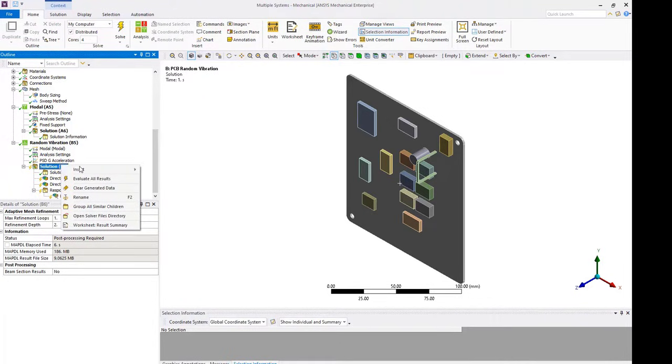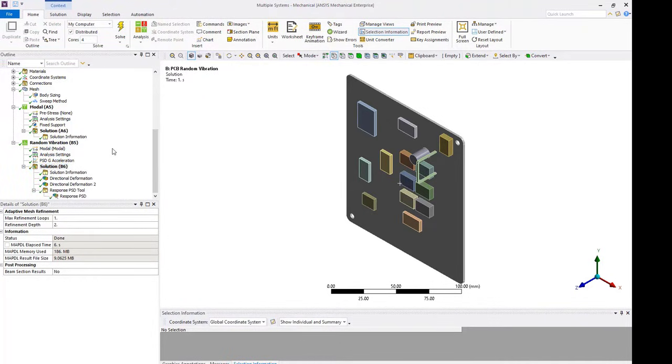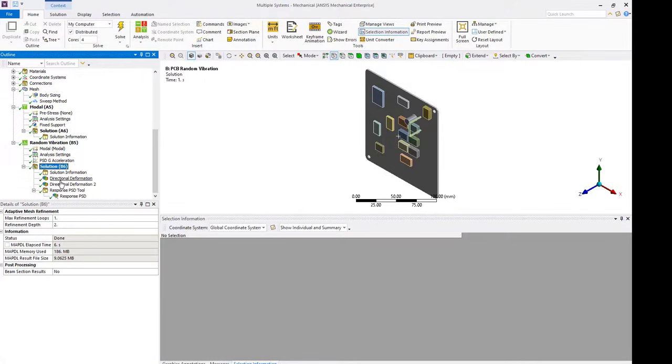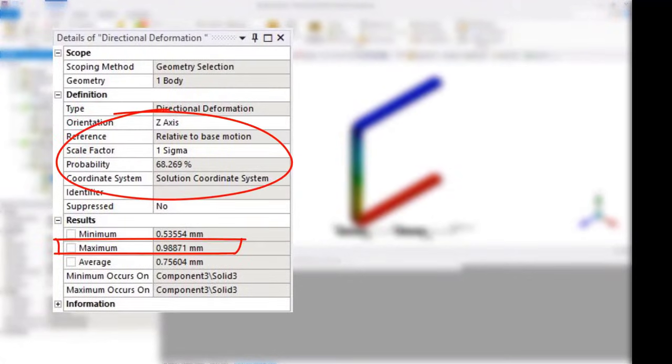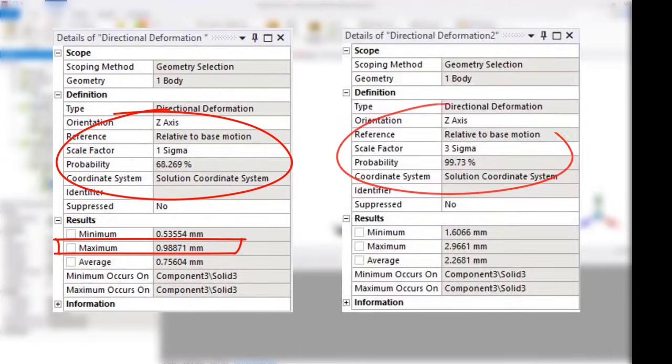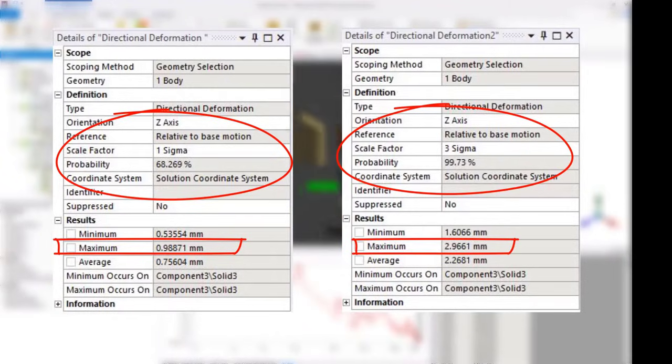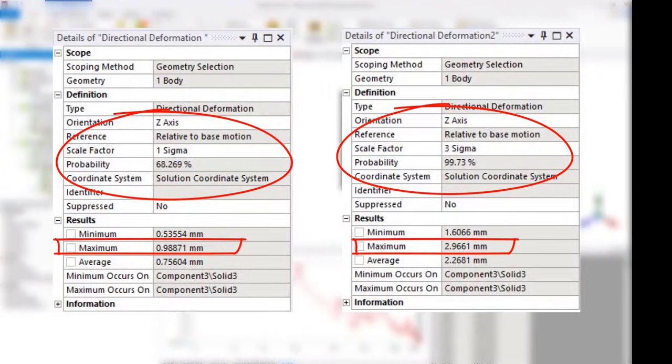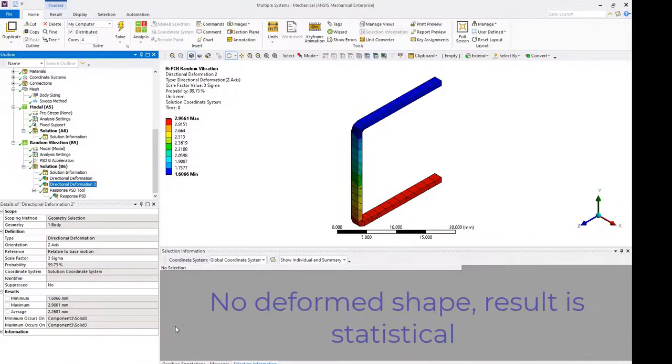Next, evaluate the results. By examining the 1 sigma directional deformation result, one can conclude that there is about a 68.3% probability that the deformation of the PCB component will be below 0.98 mm. Whereas, for a 3 sigma directional deformation result, there is a 99.7% probability that the same deformation will be below 2.96 mm. Notice that there is no deformation shape since these results are statistical in nature.